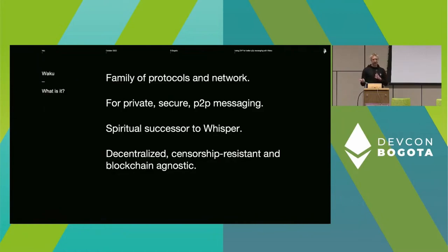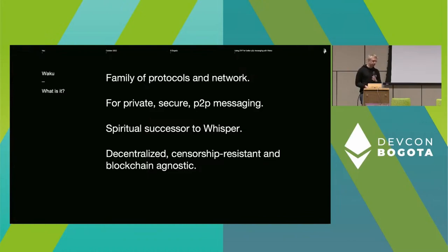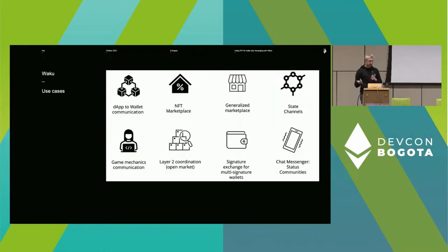So, what is Waku? It's a set of modular protocols for peer-to-peer communication with a focus on privacy, security, and being able to run anywhere. It's basically the spiritual successor to Whisper. By modular, we mean that you can pick and choose protocols and how you use them depending on various constraints and trade-offs — for example, bandwidth usage versus privacy. It's designed to work in resource-restricted environments like mobile phones and web browsers.